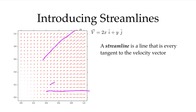Those are streamlines — there's a little bit of upwards motion in this one and a little bit of upwards motion on this one. They're everywhere tangent to the velocity vector, and you can take any velocity field and draw lines which are tangent like that. It's actually a very useful thing to do.